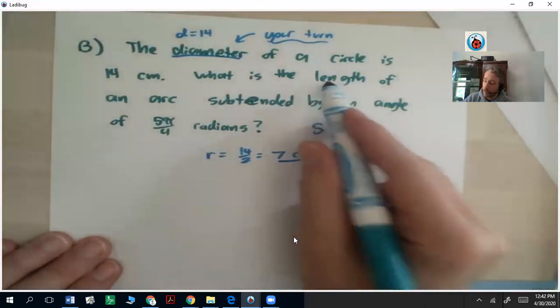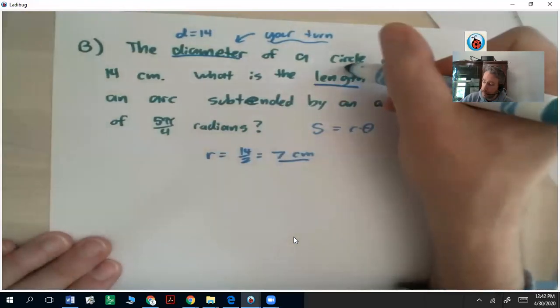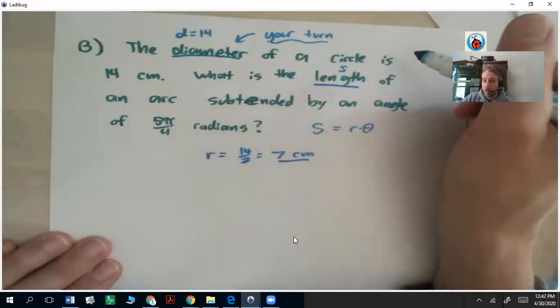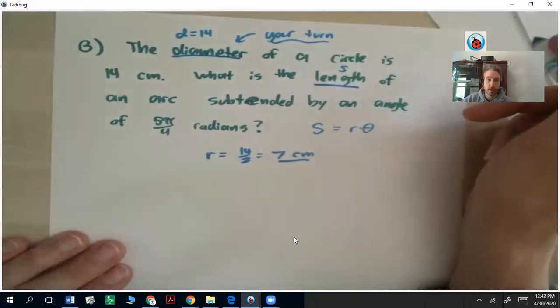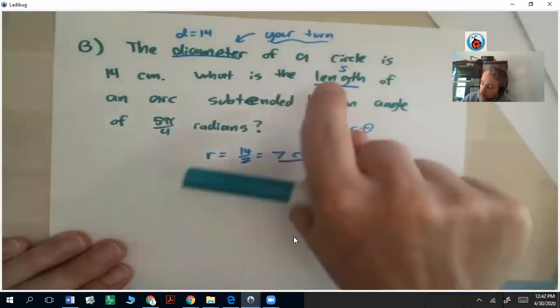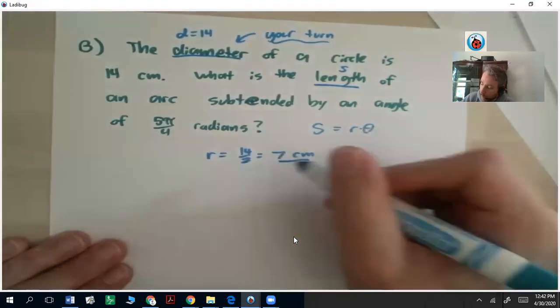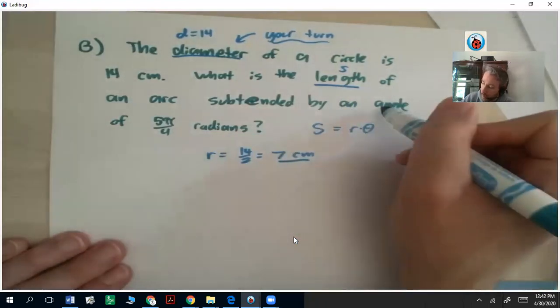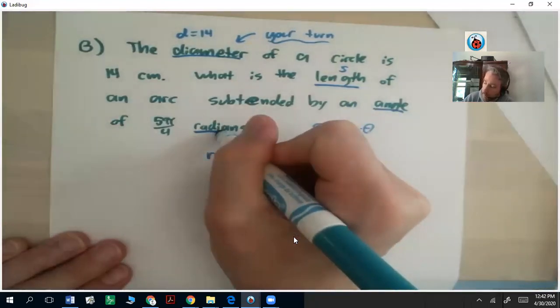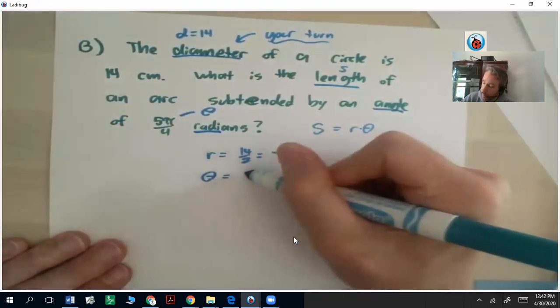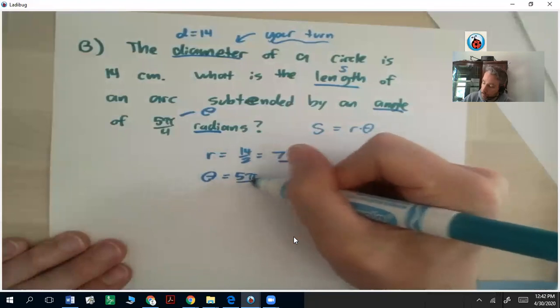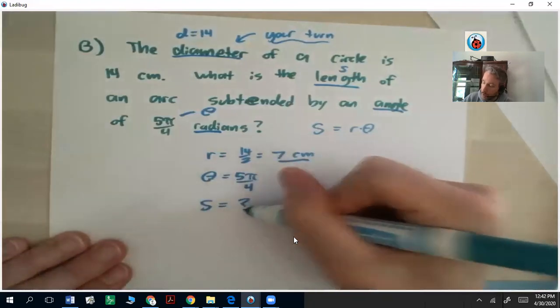The question is, what is the length, that's s, of an arc subtended by an angle of 5π over 4 radians? Subtended is the angle that opens up toward that arc. So that's what that word means, don't worry too much about the name of that word. We want to know the length. If we don't know s, we're given the angle in radians, so that's your theta. So your theta is 5π over 4. S is unknown.